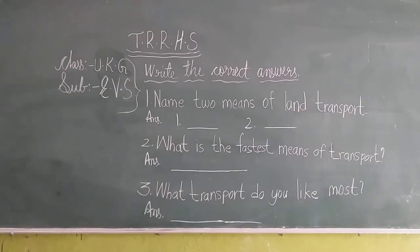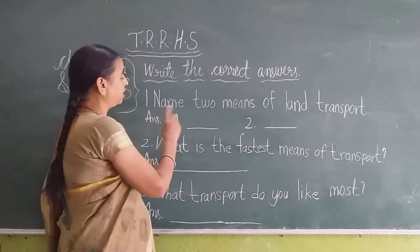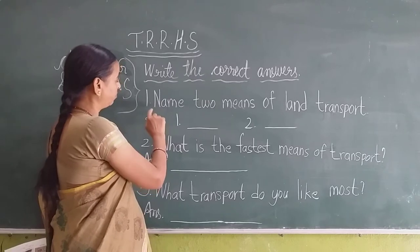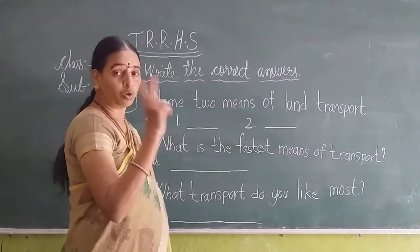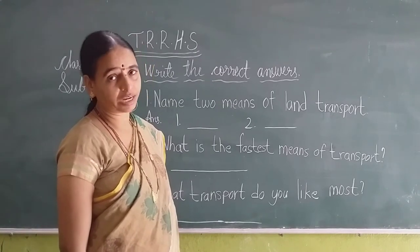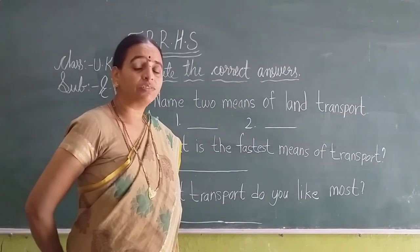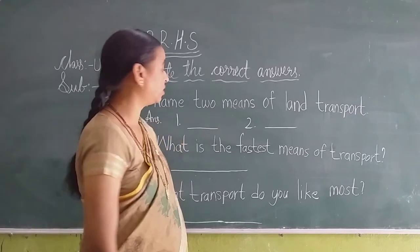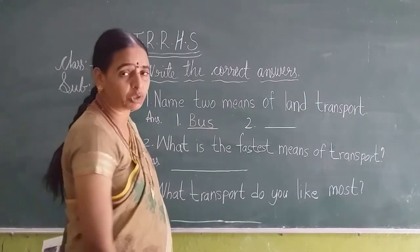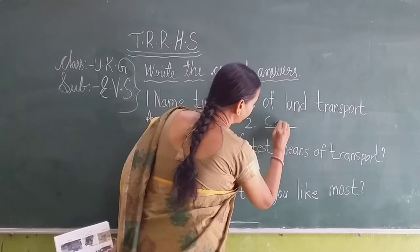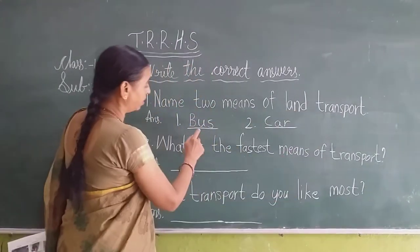Now look here. On the board we have some questions — write the correct answers. The first question: name two means of land transport. Land transport and road transport are the same, so which vehicles will move on the road? Bus and car. Name two means of land transport: bus, car.